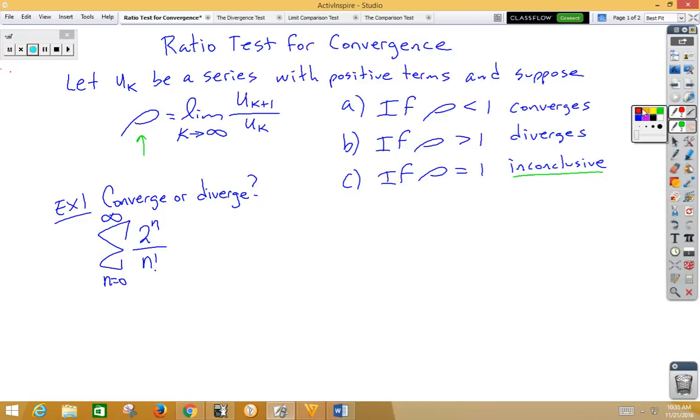So let's take a look at an example. In our first example, we have the series 2 to the n over n factorial. So the first thing we would like to do is to find the next term. So the next term would be 2 to the n plus 1 over n plus 1 factorial.